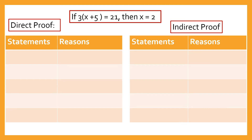Here's an example of direct proof and indirect proof. The conditional statement is: if 3 times the quantity x plus 5 is equal to 21, then x is equal to 2. In direct proof using two-column proof, the first column has the statements and the second column has the reasons. For every statement you write, you need to support it with reasons — based on definitions, properties, postulates, or theorems.